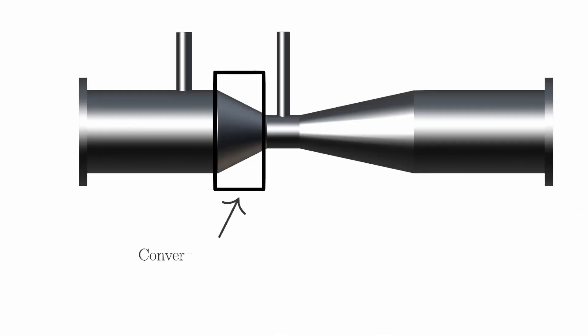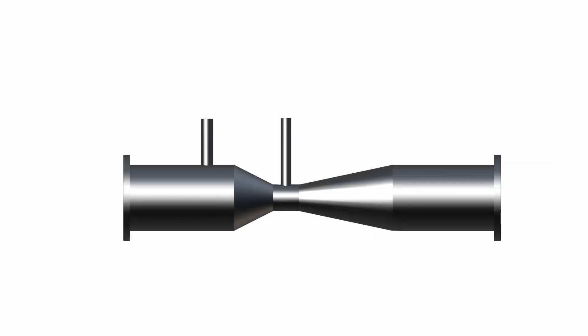A question might come to your mind: why is the divergent cone length bigger than the convergent? In a divergent venturi meter, the flow passage gradually expands after the throat section, allowing the fluid to transition smoothly to the original pipe diameter.